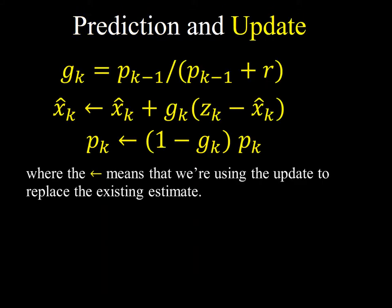Here are the update formulas. We see the gain and noise variance again. I've written the next two equations with a left-pointing arrow to indicate we're overwriting — updating the current state estimation based on the current observation. You'll see this written with different subscripts or with additional notation to indicate prior and posterior. As a computer scientist, I think about setting variables and updating them. Likewise, we update the prediction error P using the gain formula we saw before.